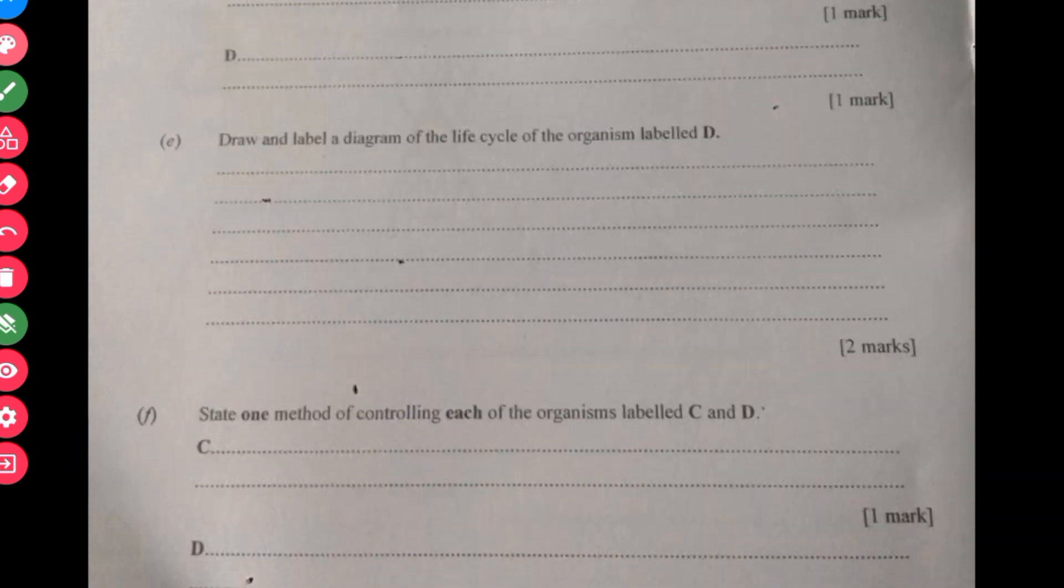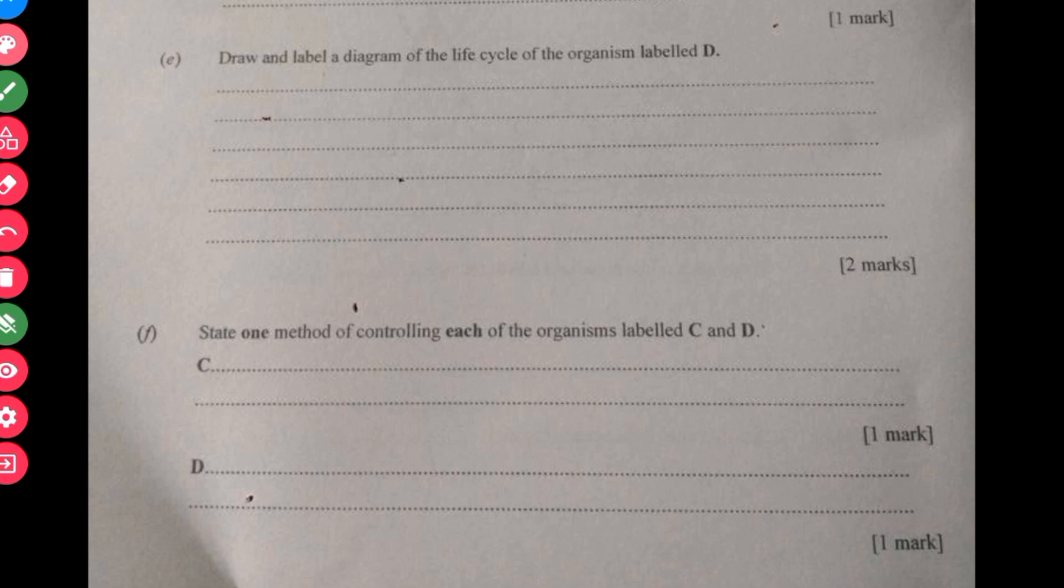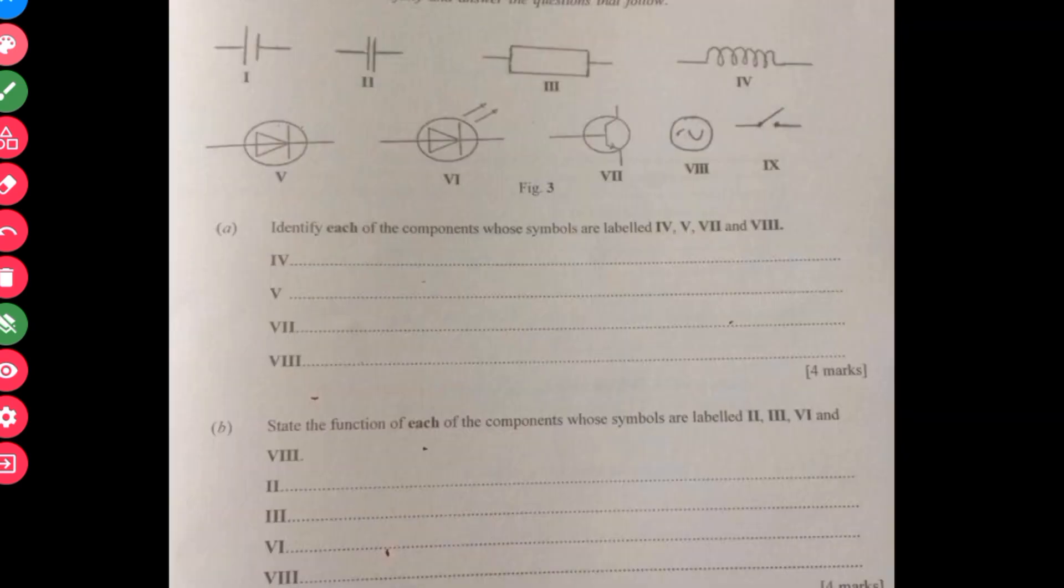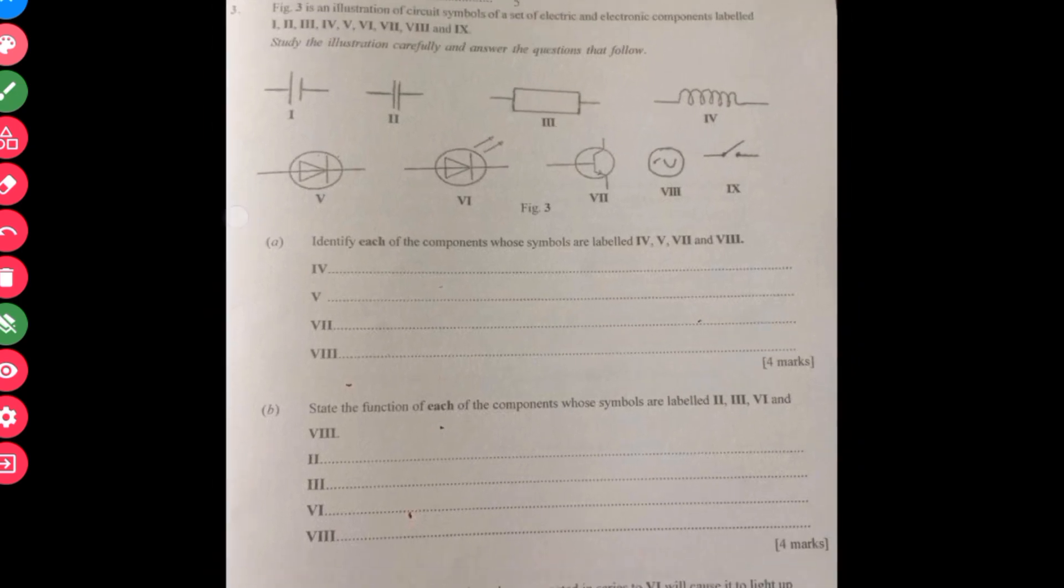Then draw and label a diagram of the life cycle. You are not asked to describe so you just draw and then you are good to go. State one method of controlling the labeled C and D. This topic dropped in the essay part as well as you have some questions like that in section A. Then you have it in section as a practical aspect as well.